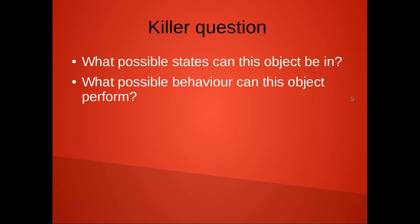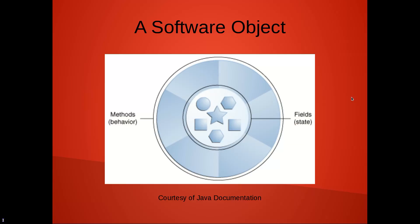Here comes the key question that you guys need to always ask yourself: what possible states can this object be in, and what possible behavior can this object perform? You always need to ask this question when performing object oriented programming such as Java. Now here is the diagram of a software object.